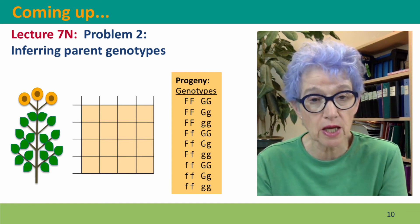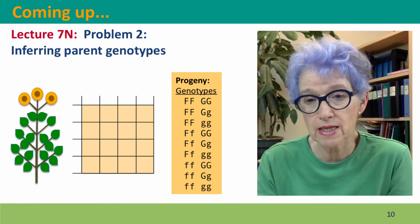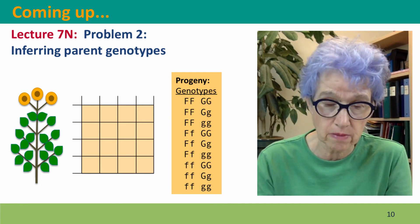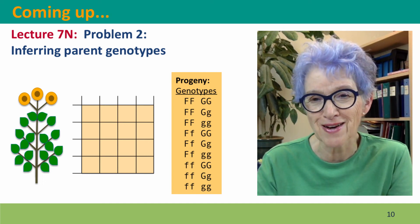Coming up next is the second of our problems. In this problem, we're going to work backwards. We're going to take offspring genotypes and infer what the parent genotype must have been. I hope to see you there.